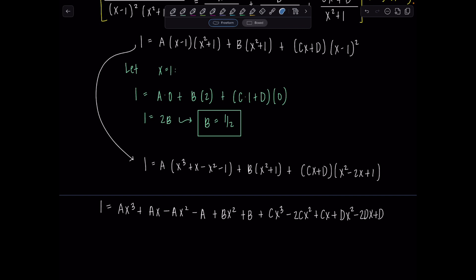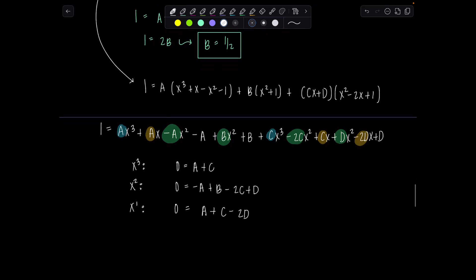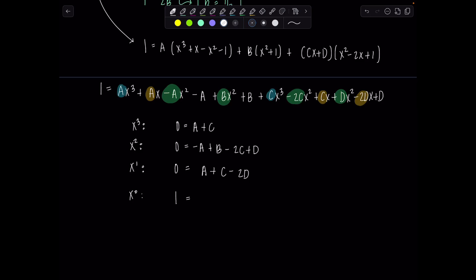Now we'll set up our system of equations. And then at that point, I'll use the fact that we know b is a half to our advantage. So starting with the highest power term, highest degree term, x cubed. I don't see any x cubed on the left, do you? No, Professor V. So that means 0 has to equal a plus c. Moving down the line, x squared. Any x squareds? No. So 0 has to equal negative a plus b minus 2c plus d. x to the first. I don't see any x to the first. So 0 must equal a plus c minus 2d. And then lastly, our constant term, 1, has to equal all the rest of the terms left over, which should be constants: negative a plus b plus d.